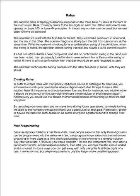Because Spooky Radionics has 3 dials, most people assume that only 3-digit rates can be programmed into the instrument. You can program longer rates into the instrument by putting in 3 digits at a time and broadcasting or transferring to a remedy solution. For example, if you had a rate of 17,890,234 you would program 178 into the instrument first, then after a period of time 902, and broadcast as before, then 340. Note that a zero is added when unused. In some ways you can get away with only using the first three digits of a rate, but others may prefer to use the longer more detailed approach.